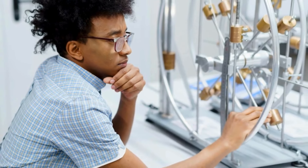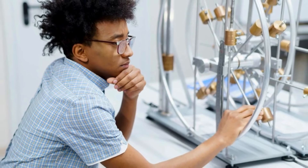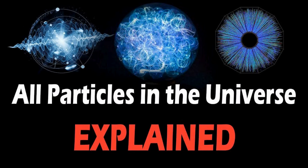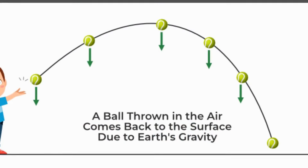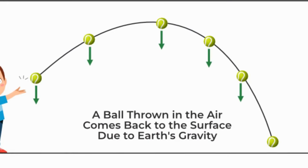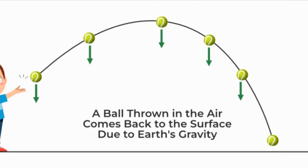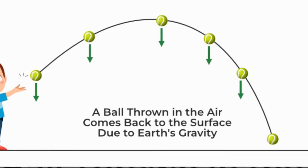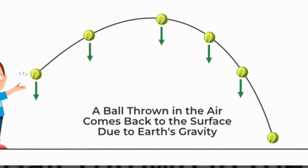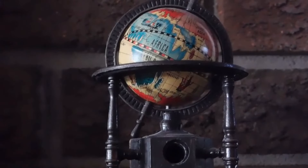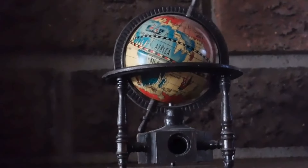As we journey through gravity's story, we encounter Albert Einstein's theory of general relativity. Einstein proposed that gravity is not just a force, but a bending of space and time around massive objects. Picture a heavy bowling ball on a stretched-out trampoline — smaller objects, like marbles, will roll toward the bowling ball. This visual metaphor captures how massive objects warp the fabric of space, influencing the paths of nearby objects.